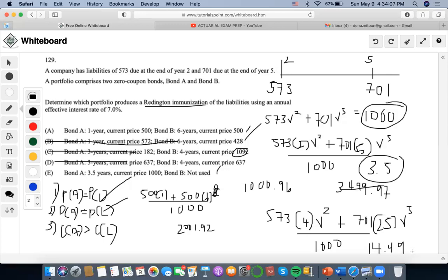So now let's find out what is happening in part A. So for this one, 500 squared, so it'd be 1 squared, this would be 36. So it'd be 500 times 1 plus 500 times 36 divided by present value of 1000. This has an 18.5 convexity, which is greater than my liability of 14.49, so this one is kept.